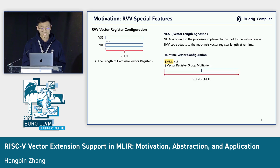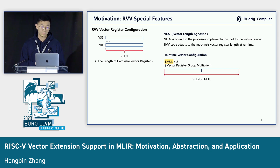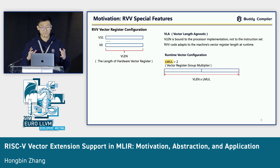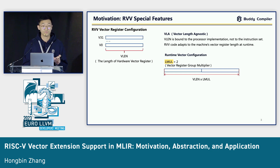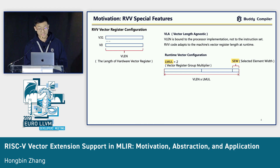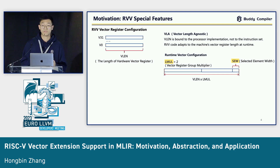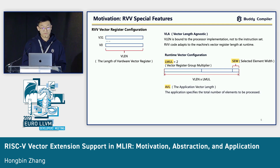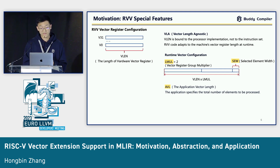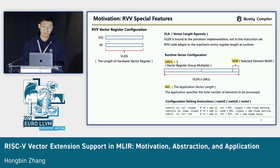How can we do this at runtime? We use vector configurations. There are three configuration points. The first is LMUL — the vector register group multiplier — which means we can group multiple vector registers together to make a longer one. Maybe LMUL equals two, giving us two vector registers grouped together. We can also select element width with SEW, the element type we can set — for example, F32 with SEW32. The third configuration parameter is AVL, the application vector length, which lets the application specify the total number of elements to be processed.